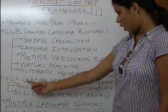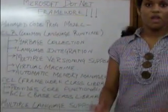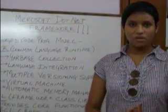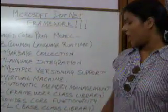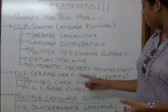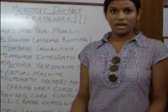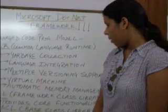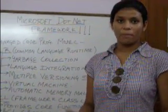Next comes the FCL, which is the Framework Class Library. This provides the core functionality for ASP.NET, ADO.NET, Web Services, Windows Forms, XML, etc. It also consists of the BCL, which is the Base Class Library. This is a library of functionality provided to all the coding languages which use the .NET Framework. BCL consists of classes which encapsulate various common functionalities.